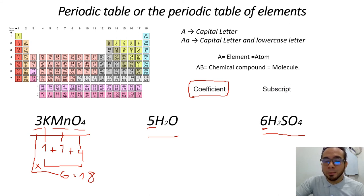In this exercise, we have two hydrogens, and one oxygen. So, two plus one is three.